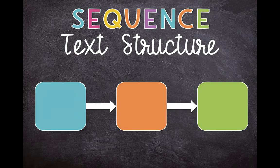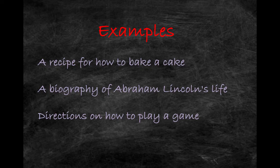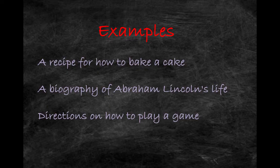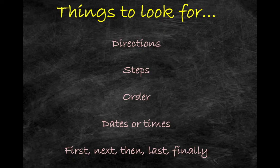The next text structure is called sequence. A sequence text structure is when the author describes items or events in order, or tells the steps to follow to do or make something. Sometimes an author will call it chronological order, sequential, or time order — they all mean the same thing. If you're reading a recipe for how to bake a cake, a biography about Abraham Lincoln's life, or directions on how to play a game, you are reading a sequence text structure. Look for directions, steps, order, dates or times, or sequencing words like first, next, then, last, finally.